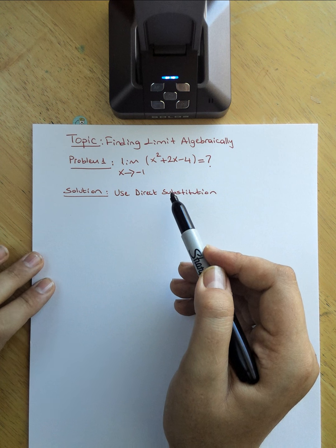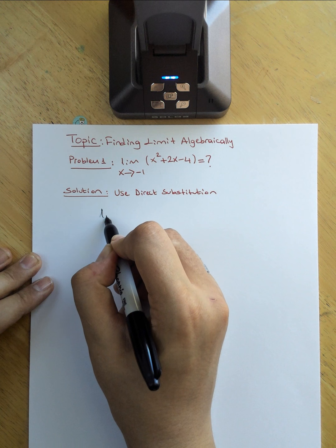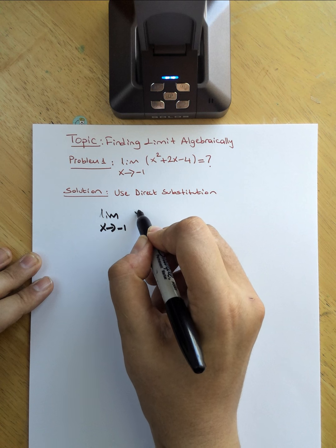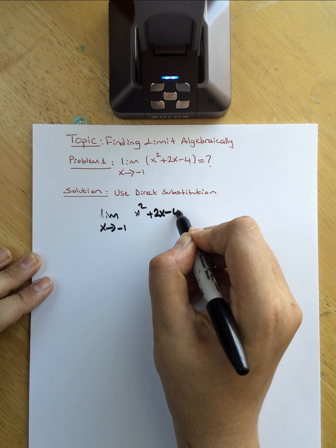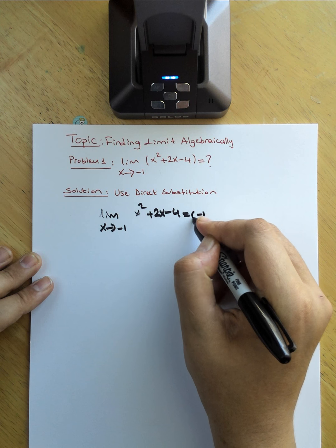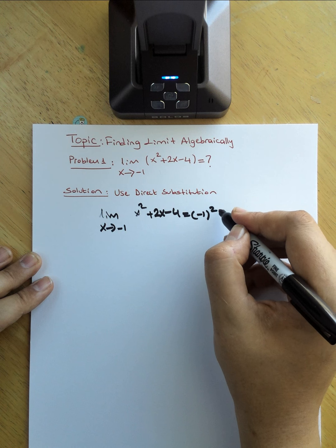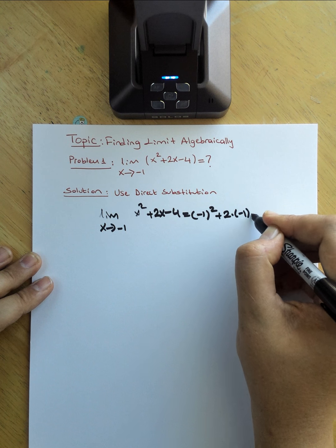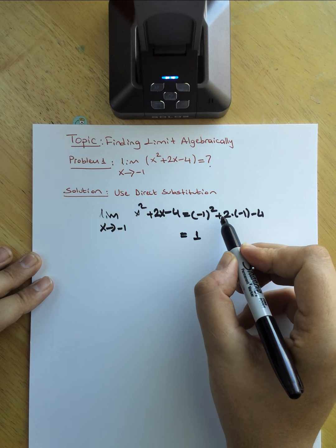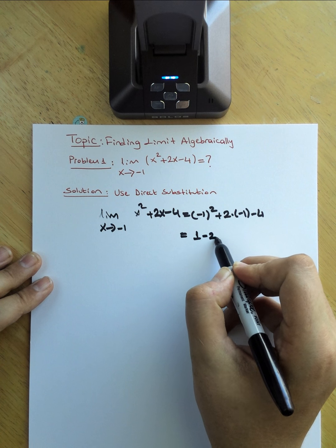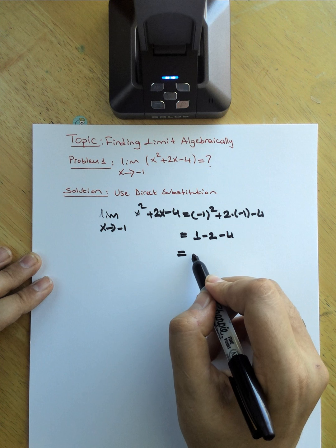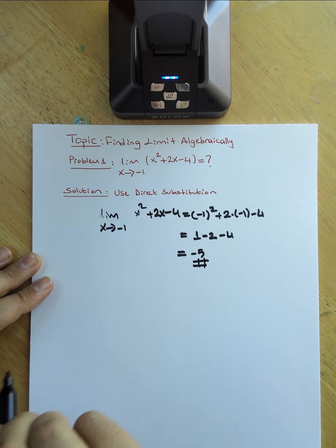So that's why I'm going to use direct substitution of negative 1. The limit x approaches negative 1 of x squared plus 2x minus 4 will equal: plugging in negative 1, we get negative 1 squared plus 2 times negative 1 minus 4. Negative 1 squared is positive 1, and 2 times negative 1 is negative 2, minus 4. Simplifying, I get negative 5.